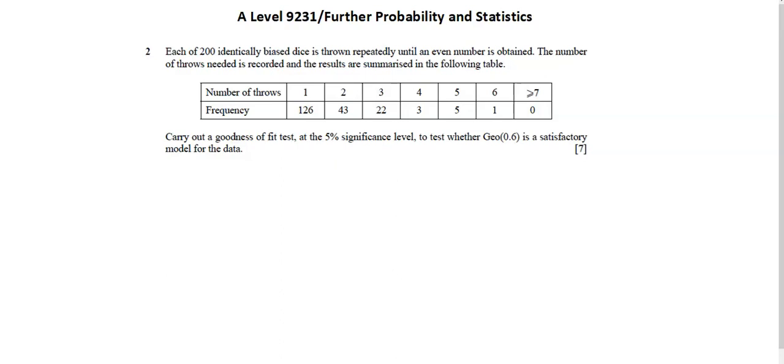Each of 200 identically biased dice is thrown repeatedly until an even number is obtained. The number of throws needed is recorded and the results are summarized in the following table. Carry out a goodness of fit test at the 5% significance level to test whether the geometric distribution with a probability of 0.6 is a satisfactory model for the data.